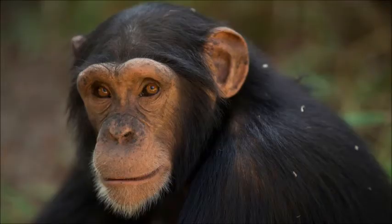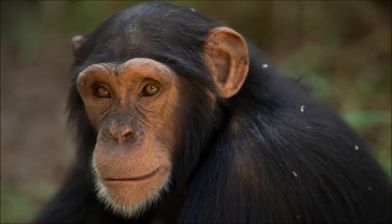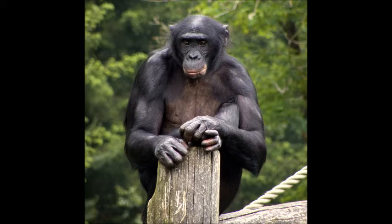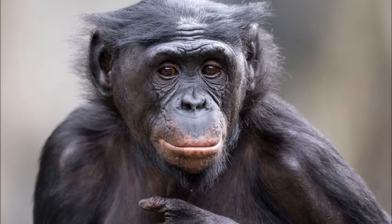The first is pretty obvious. We share over 95% of DNA sequences with chimps, including the non-coding regions. This fact has been repeatedly verified over the years, including in the 2012 paper, The Bonobo Genome Compared with the Chimpanzee and Human Genomes, that says: "On average, the two alleles in single-copy autosomal regions in the Ulindi genome are approximately 99.9% identical to each other, 99.6% identical to corresponding sequences in the chimpanzee genome, and 98.7% identical to corresponding sequences in the human genome." Is this just a coincidence?